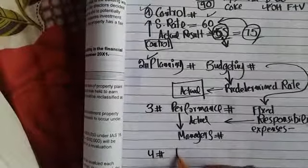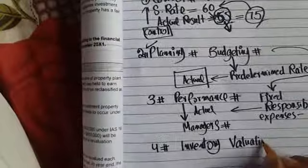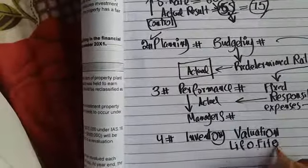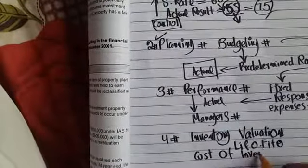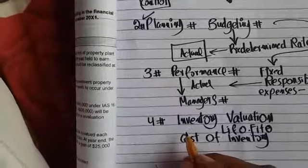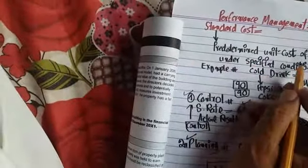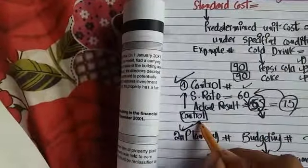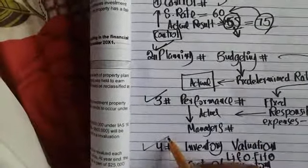The fourth purpose is inventory valuation. Inventory is a current asset on the balance sheet. Similar to LIFO, FIFO, or average cost methods, we can calculate the cost of inventory using standard cost. So standard cost is used for control, budgeting/planning, performance management of cost centers and managers, and inventory valuation.